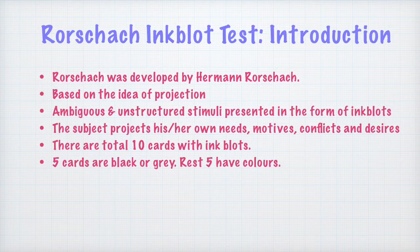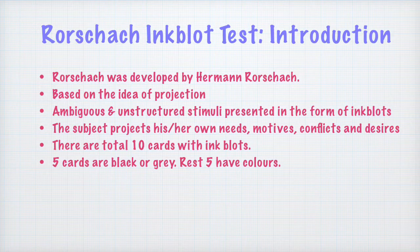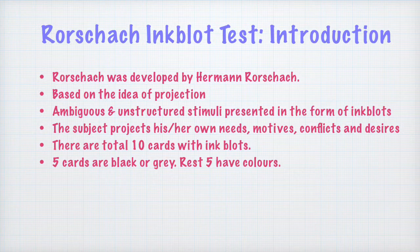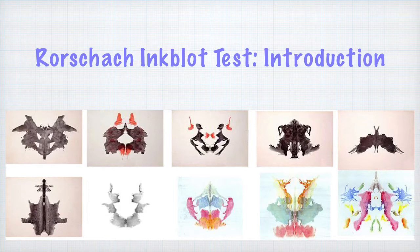The Rorschach inkblot test contains cards which have inkblots on them. Inkblots are highly unstructured and ambiguous — they are not clear forms. Hence there is a lot of scope for the person looking at the cards to project his inner world of feelings, thoughts, conflicts, memories, and experiences onto the inkblots. The Rorschach inkblot test has ten cards in total: five of the cards are black or grey in colour and the rest five have colours. You can see that these are the kind of inkblots shown in the Rorschach inkblot test.